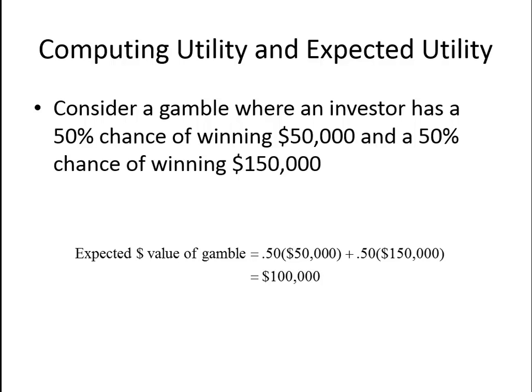If we figure out what the expected value of the gamble is, it's just a weighted average: 50% times $50,000 plus 50% times $150,000, so the average is $100,000. That's the expected value of the gamble.